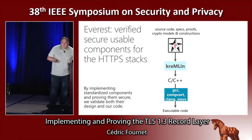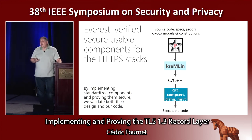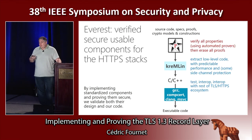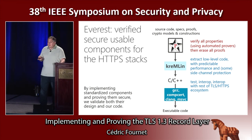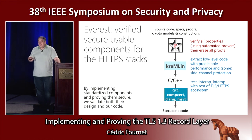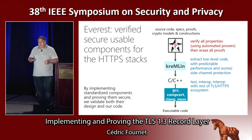We program those components in a language called F*, where we can write the source code, specs, proofs, crypto models, and constructions. We verify them automatically using the F* type checker that uses Z3 and SMT provers underneath. Then it generates — via Kremlin, the compiler backend — low-level, predictable C code with reasonable performance and some level of protection. At that level, we can interoperate with any other implementations, plug and play within components, and check conformance with standards by testing against other implementations.